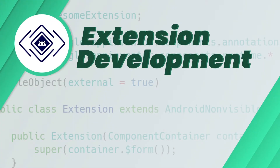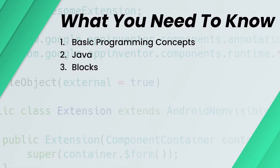Hello awesome friends, this is your host Daniel Hassan and you're watching the third lesson of this course. What you need to know in order to start extension development: you need to have some basic understanding of programming concepts like object-oriented programming, what are objects, classes, variables, data types, and all that basic stuff. You also need to have a basic understanding of Java — you don't need to be a pro, but a basic understanding will help a lot.